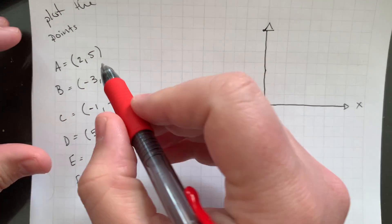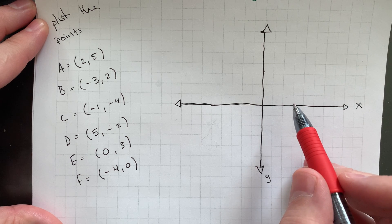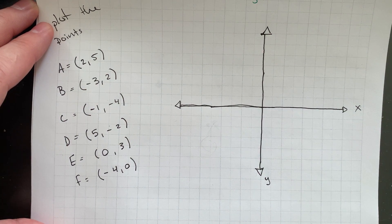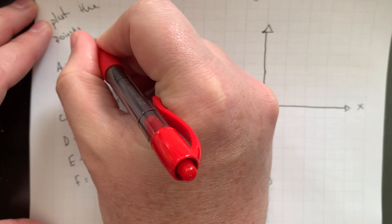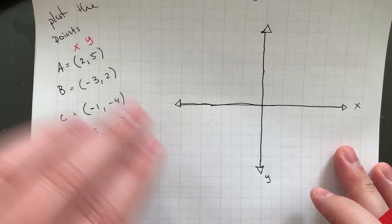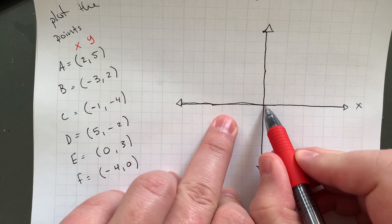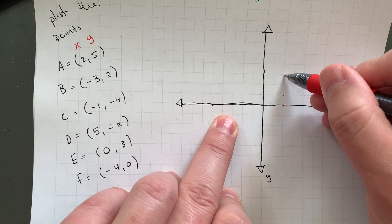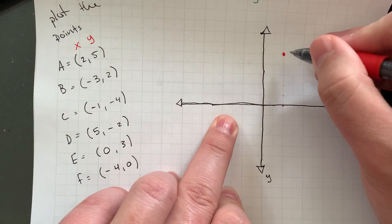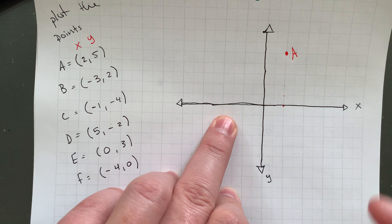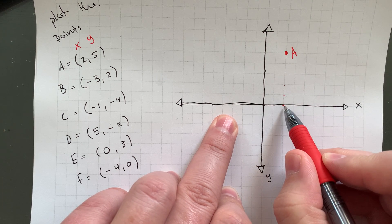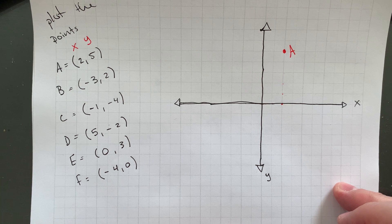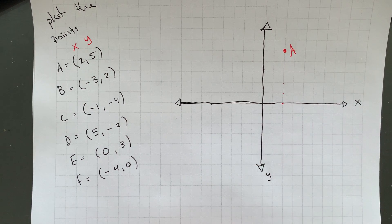So when we have a point — let's take, for example, point A, which is 2 comma 5. That means my x value is positive 2 and my y value is positive 5. So I'm going to shift positive 2 in the x direction — that's 2 moves to the right — and then positive 5 in the y direction, which is 5 ticks up. So coordinate A is going to be there: 2 ticks to the right and 5 ticks up.